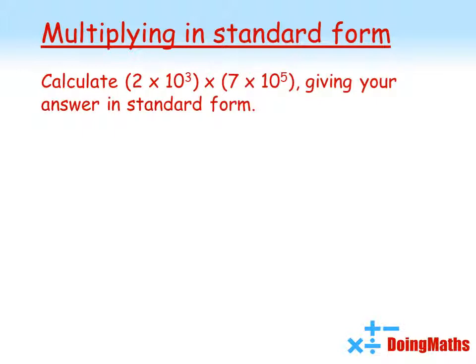Let's start with multiplying in standard form. We're going to calculate 2 times 10 to the power of 3 times by 7 times by 10 to the power of 5. We're going to give our final answer in standard form.